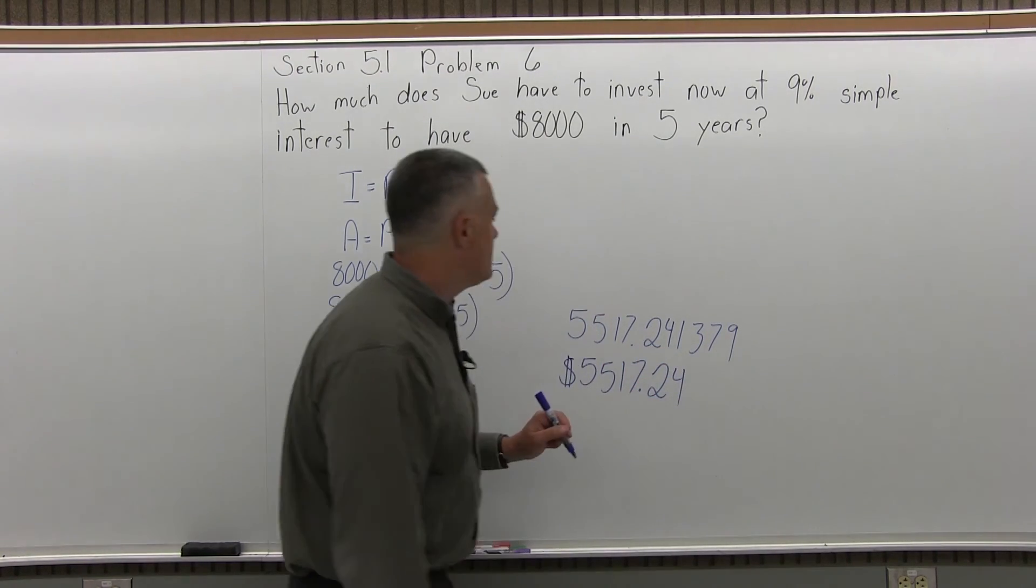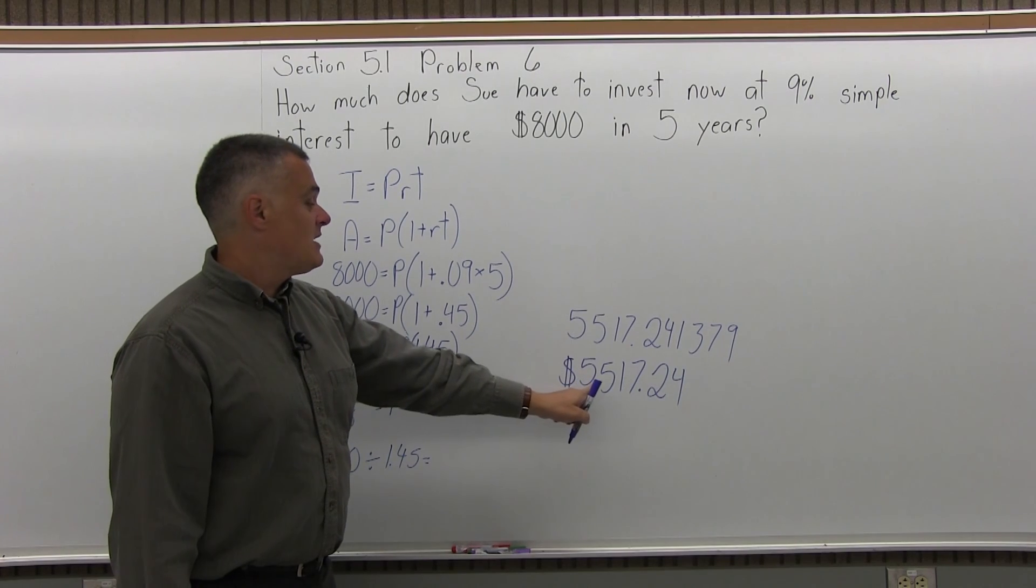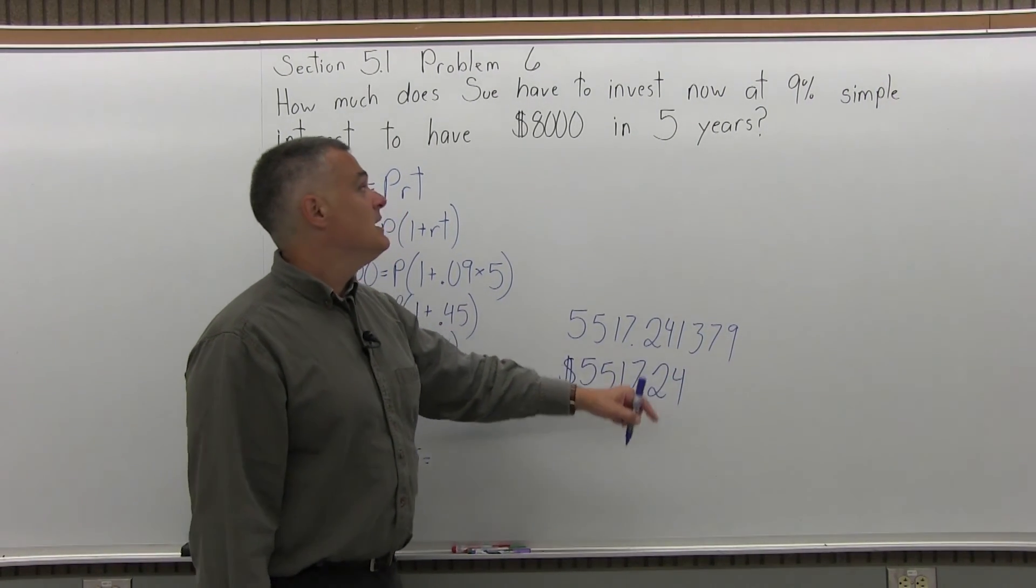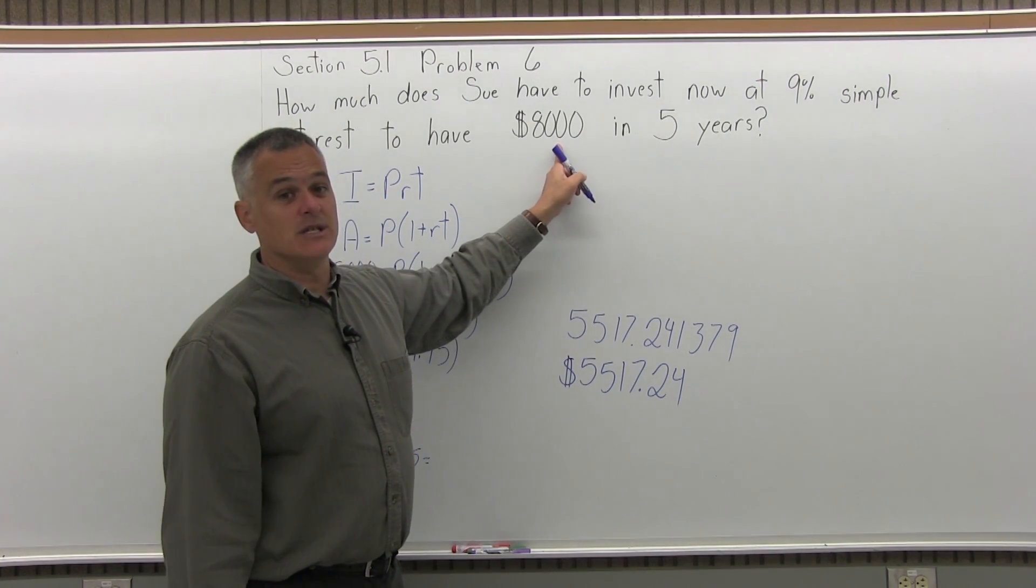So what that means is if Sue invests $5,517.24 now, in five years, she'll have the $8,000 that she needs.